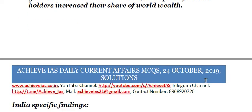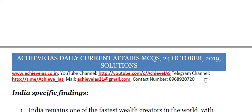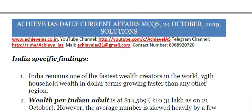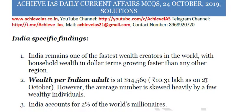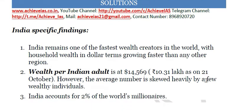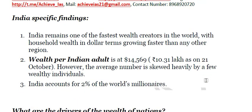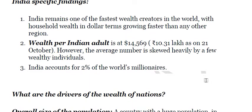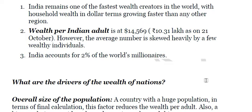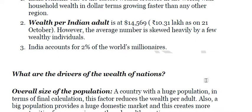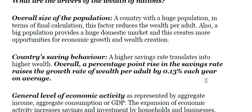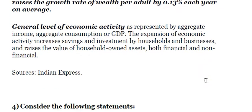The richest 10% own 82% of global wealth, and the top 1% alone own 45% of the wealth, meaning the lowest strata of society are suffering under the current mode of economic development. India-specific findings show that India remains one of the fastest wealth creators in the world, with household wealth in dollar terms growing faster than any other country. Wealth per Indian adult is $14,569, though this average is skewed heavily by a few wealthy individuals. India accounts for 2% of the world's millionaires. Drivers of wealth of nations include overall population size, saving behavior, and general economic capacity.